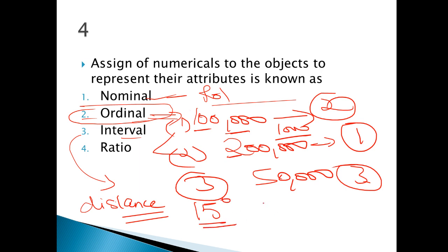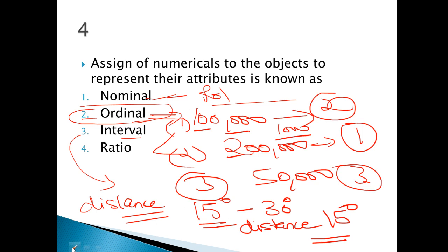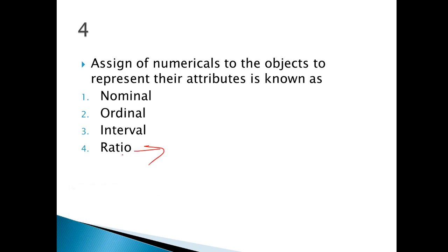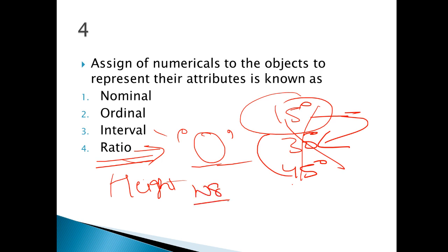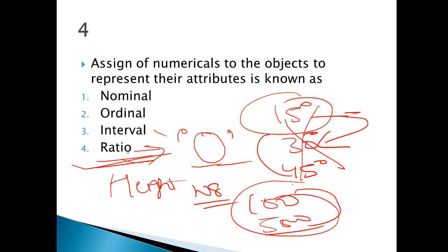Interval data has one limitation, which ratio data fulfills. In interval data there is no true zero — no zero value — which ratio data has. Also, you cannot say 15 degrees Celsius is double anything — ratio cannot be calculated here. If 45 degrees comes, you still cannot find a meaningful ratio. But ratio scale applies where the wording mentions height or weight.